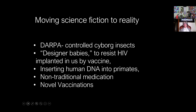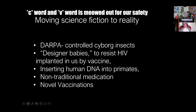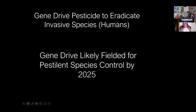We are quickly moving from science fiction to reality. We have DARPA-controlled cyborg insects, designer babies to resist HIV implanted into us if we allow them to put the vaccine in us, inserting human DNA into primates — which basically brings us the real planet of the apes — and non-traditional medication and novel vaccines. What you really need to understand, especially with COVID-19, is that there was a gene drive developed for this. This is a mandate by the United Nations to eradicate invasive species — and that includes humans. And that is what is being put in the vaccine: a gene drive likely fielded for pestilence species to control them by 2025.